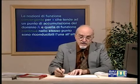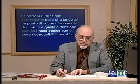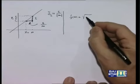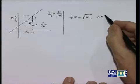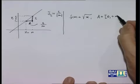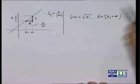Questo esempio è abbastanza facile. Veniamo ad un esempio forse meno facile. Prendiamo la funzione f(x) = √x, che sappiamo avere come dominio naturale l'insieme dei numeri non negativi, cioè l'intervallo [0, +∞).